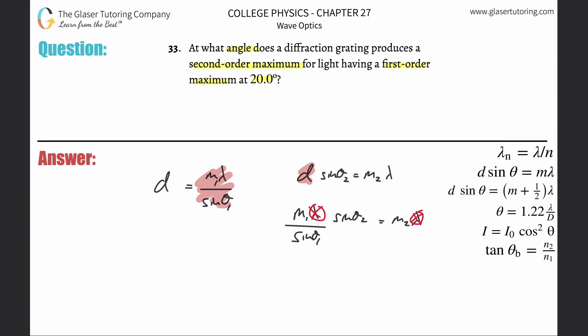You can clean this up now if you wanted, but what I'm going to do is also solve for the question I want. It says what angle does a diffraction grating produce a second order, so they're asking me to solve for theta 2 for the second order.